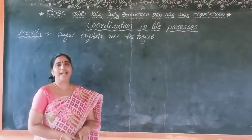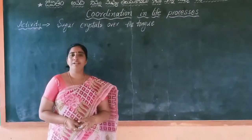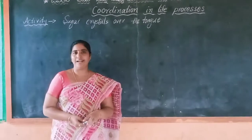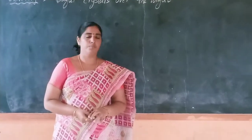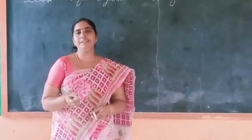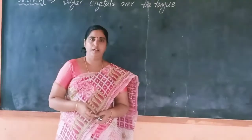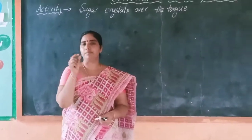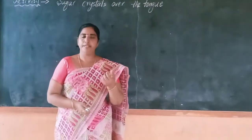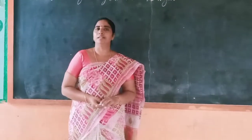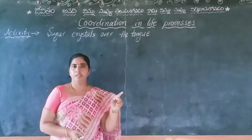Today we are discussing an activity related to how we eat food — like a sugar business example. We observe how we are eating food with the help of the tongue. When we eat food we identify the taste. We observe a small activity: you take sugar crystals, place them on your tongue, open your mouth, and immediately observe the time using a stopwatch to measure how much time it takes to identify the taste.